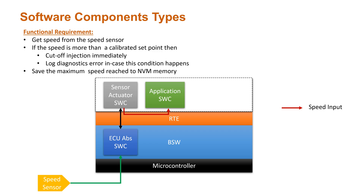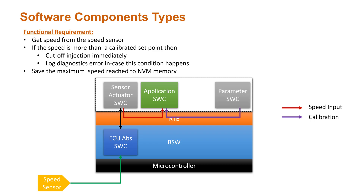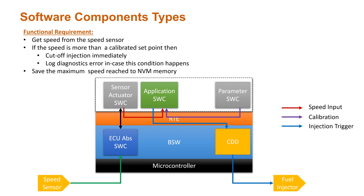The application software component gets the calculated speed from the sensor actuator software component and does further processing. For the core calculation, we need a calibration parameter to decide the high-speed cutoff value, which must be tunable during production. We introduce a parameter software component to provide this calibration to the application software component. Since the fuel injection cut off should happen immediately with no delay, we introduce a complex device driver that takes the cutoff command from the application and sets the corresponding IO pins of the controller so the injector is immediately cut off.